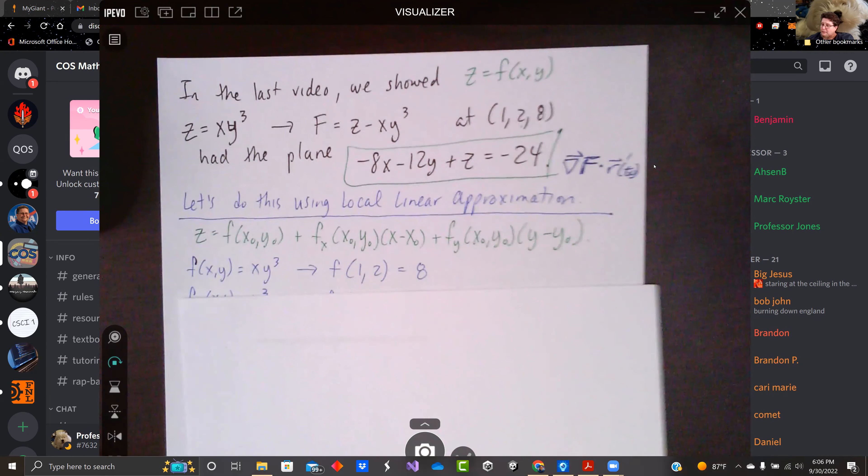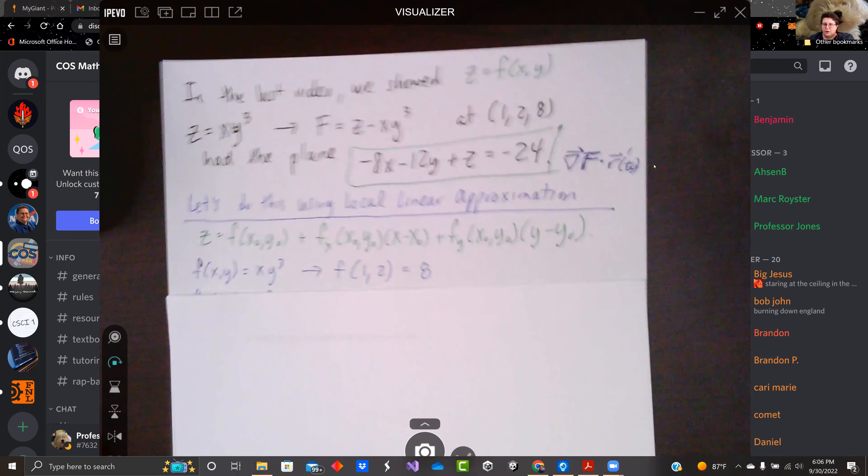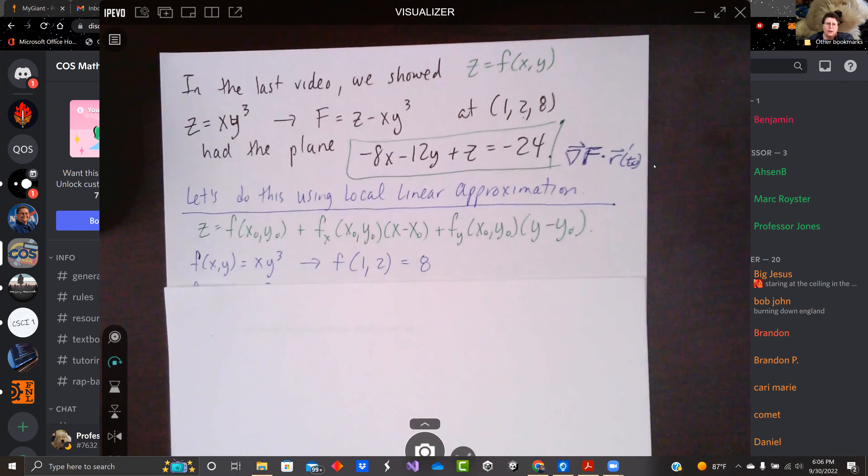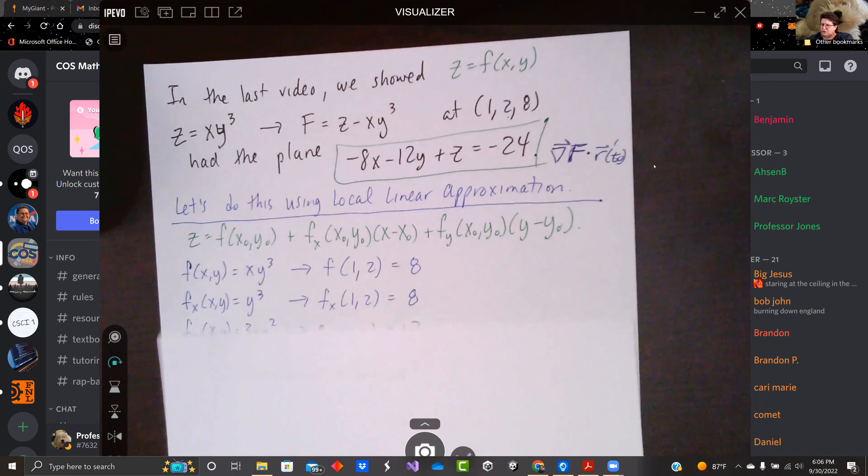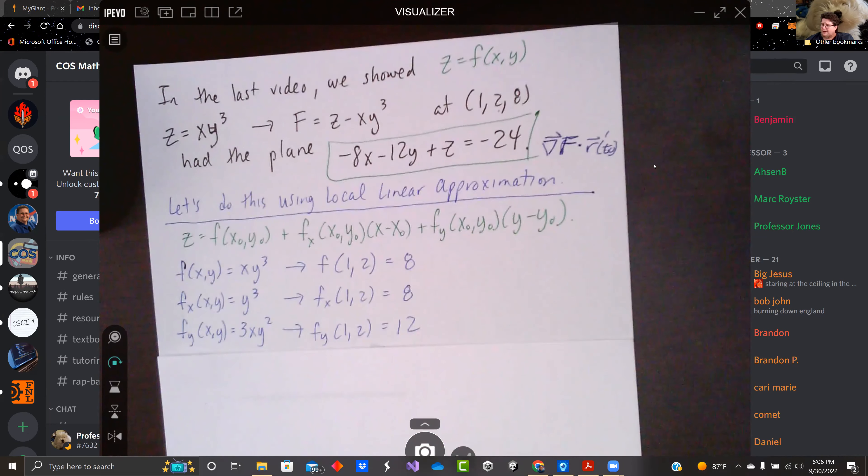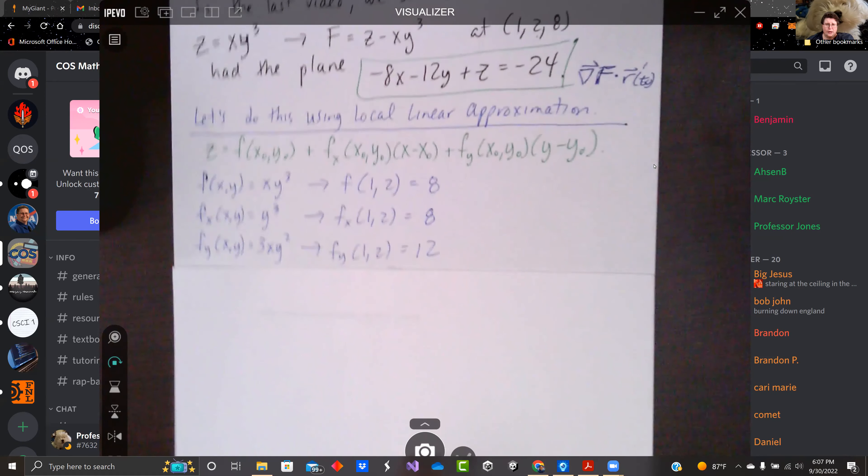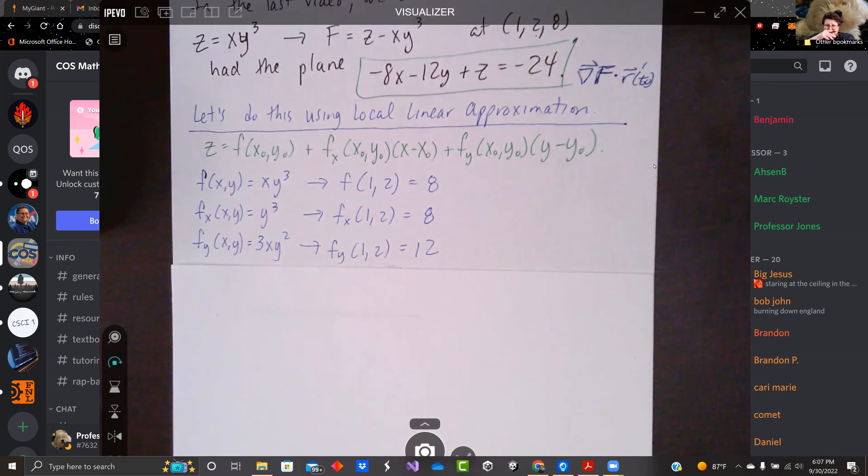f(x,y) is xy³. So if we evaluate at (1,2), we get the value of the function is 8 there. When we take the partial derivatives, we have y³ and 3xy². Evaluated at (1,2), we get 8 again, which is coincidence, and 12.